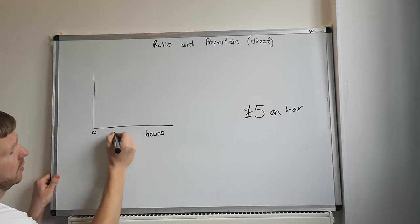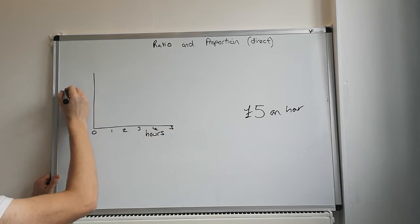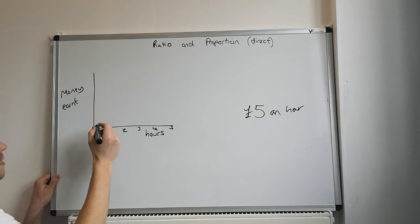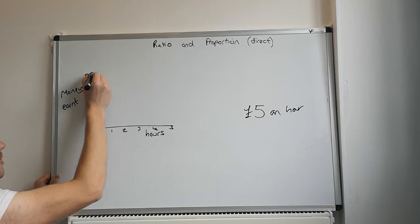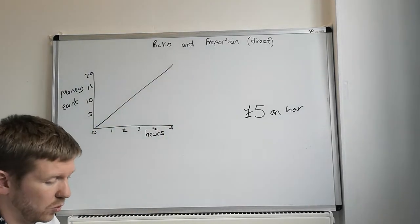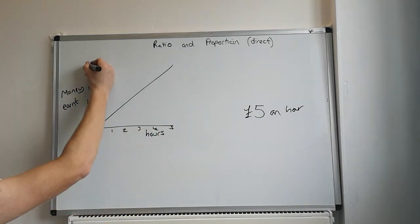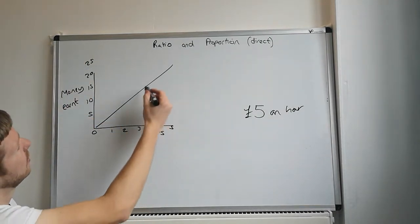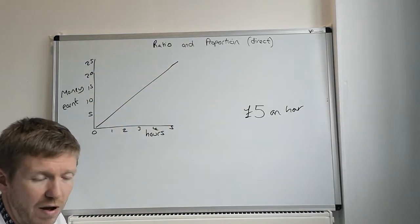If we had it as a graph, a direct proportion graph, so let's say the amount of hours you work, 0, 1, 2, 3, 4, 5, and the amount of money earned, and let's say going up in fives, you would end up being a straight graph. They're in direct proportion. You work 5 hours, you earn 5 times 5, £25. So hopefully that's clear enough. So that's direct proportion.